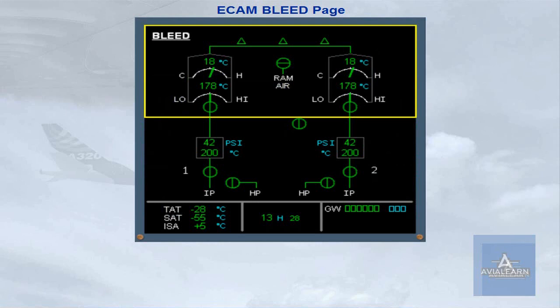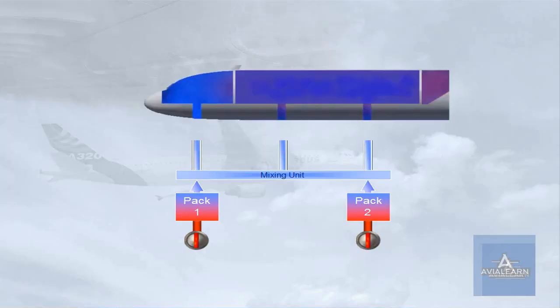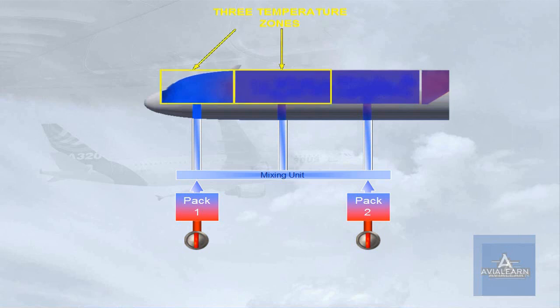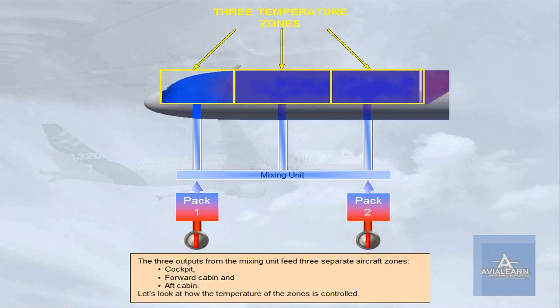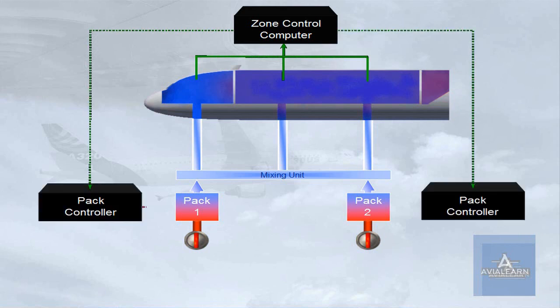Having discussed the air-conditioning packs, we will now look at how temperature and flow regulation is achieved throughout the aircraft. The three outputs from the mixing unit feed three separate aircraft zones: cockpit, forward cabin, and aft cabin. A zone controller monitors the temperatures of the three zones and sends signals to the pack controllers to set the air temperature delivered by the packs.